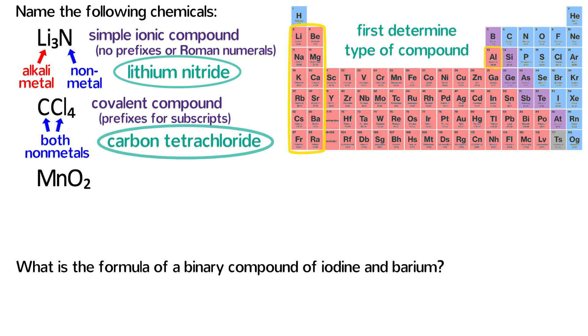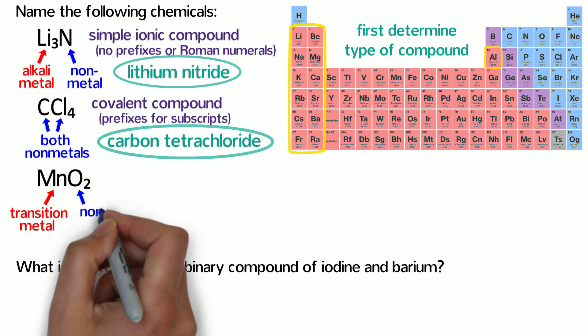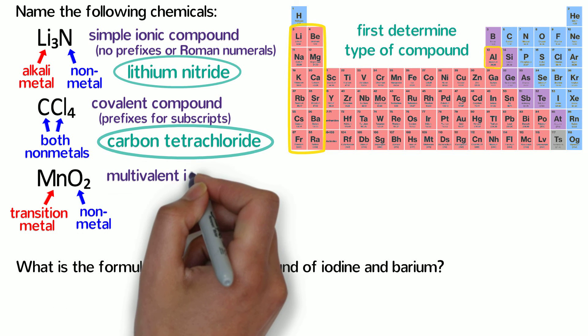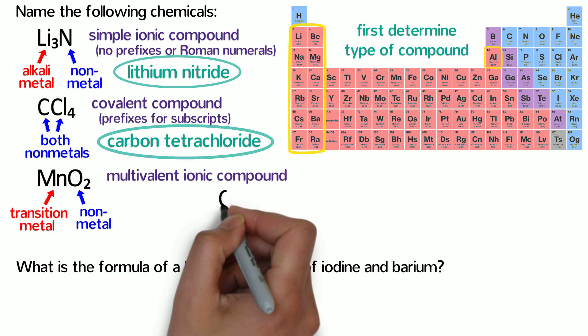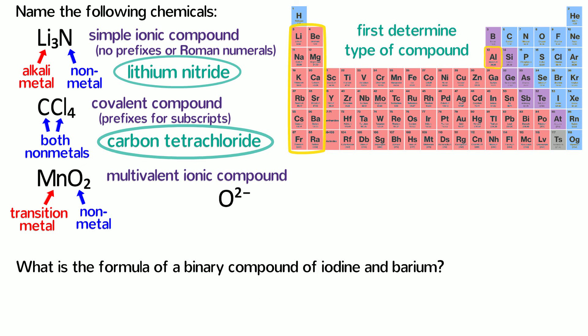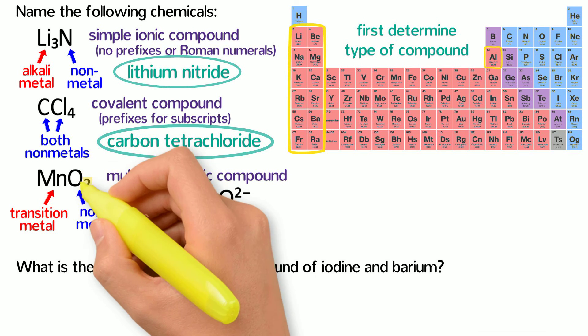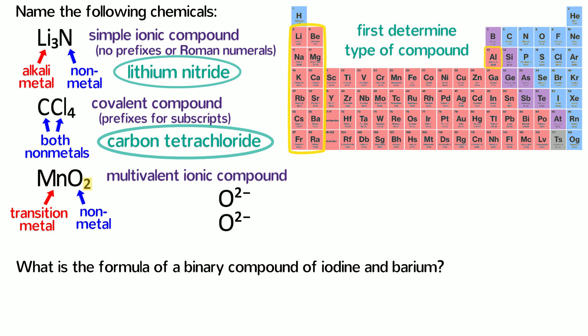The third compound is a transition metal and a nonmetal, so it's a multivalent ionic compound. To figure out the charge of manganese, we need to calculate the total charge of the anions. Oxygen with 6 valence electrons gains 2 electrons to form O2-, and there are 2 oxides in the formula. Remember the subscript 2 in MnO2 means there are 2 oxides for every 1 manganese.